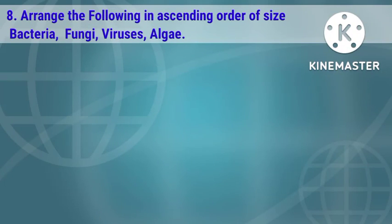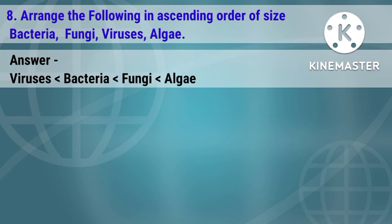Last question: arrange the following in ascending order of size — bacteria, fungi, viruses, algae. The answer is: viruses are smaller than bacteria; bacteria are smaller than fungi; and fungi are smaller than algae.